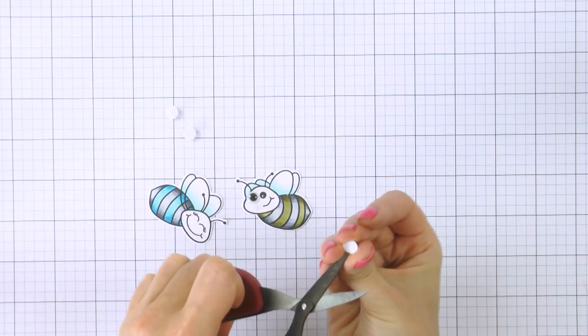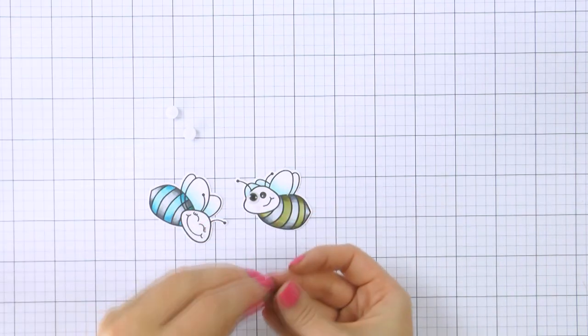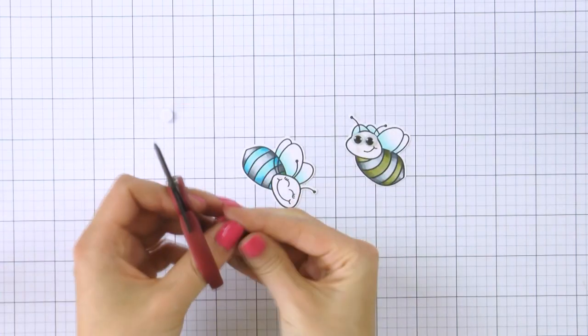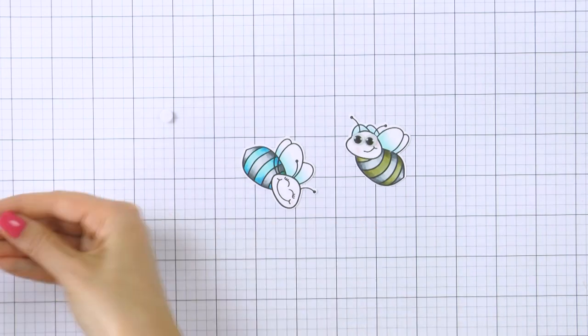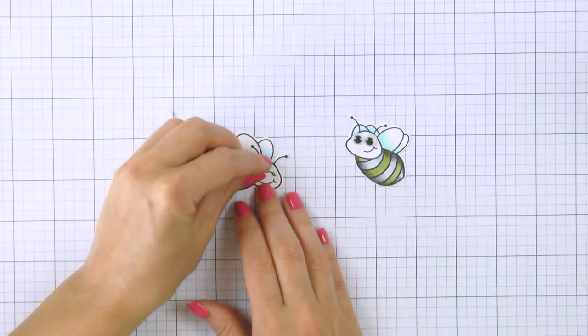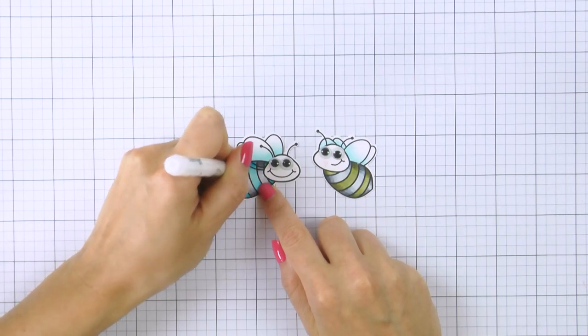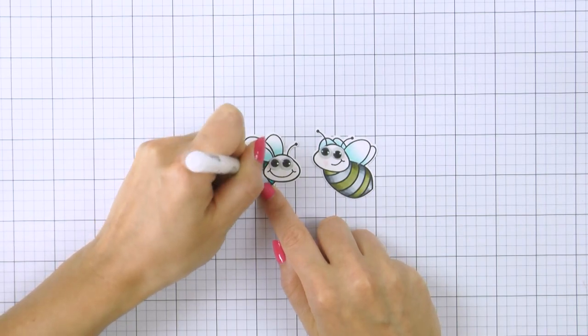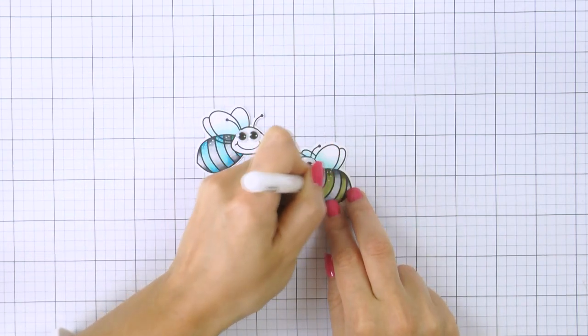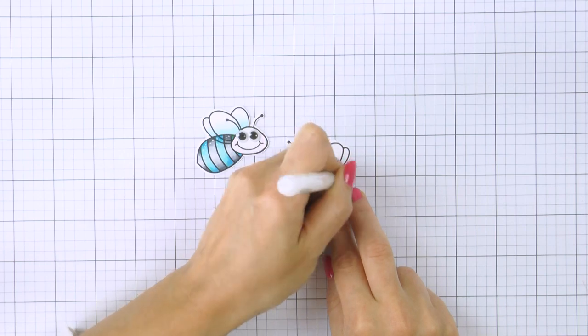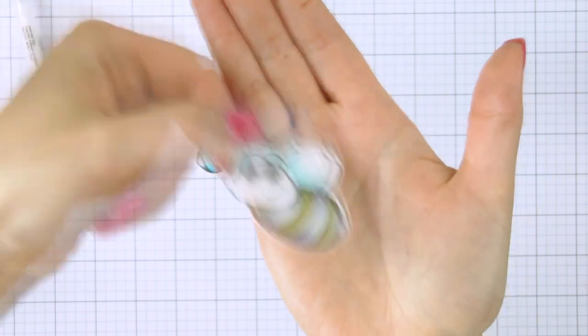I want my bees to have googly eyes so I'm going to adhere those over the stamped images. Now for the longest time, and this is a little bit embarrassing, I didn't know that these googly eyes were self-adhesive. Now I don't know if all of the googly eyes out there are self-adhesive but these were and I never knew and I would always have problems adhering them onto my project. Anyhow, I also want to add some detail to the bodies of my bees so I'm using a white pigment pen and just adding little dots to their backs. Again, you don't have to do this but I feel it just adds a little more interest to these bees.